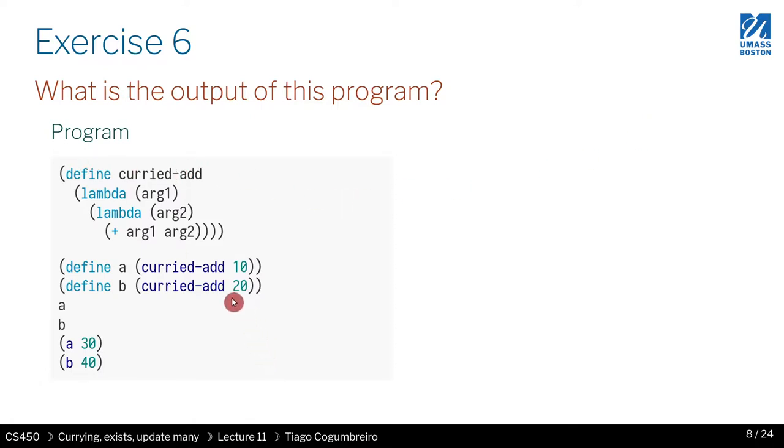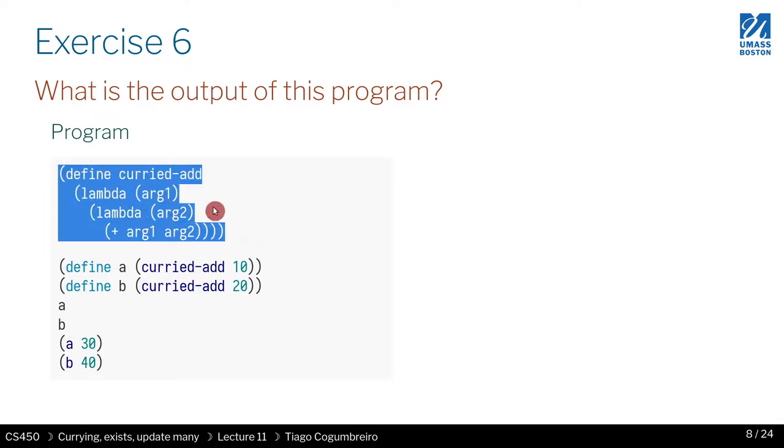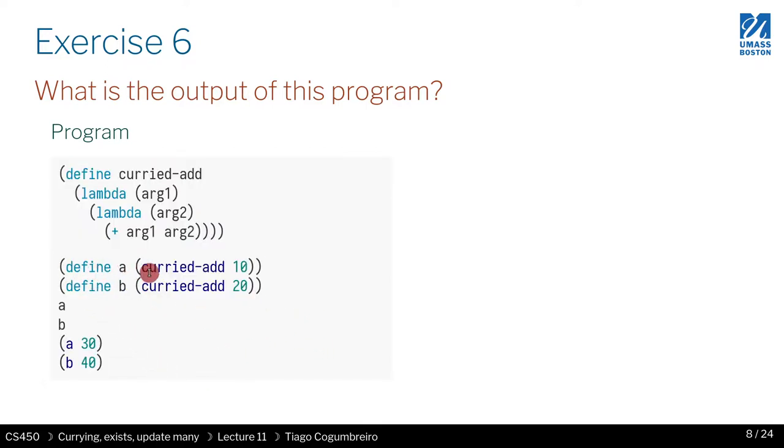Now let's look at this example where we defined another curried add that takes a lambda arg one, a lambda arg two, and then what it does at the end is it adds them together. So this is again a curried binary addition. We have this example where we initialize curried add with 10 assigned to a, and then we initialized b by initializing curried add with 20. And then we print out a, we print out b, and then we call a with 30 and b with 40. So now what I ask you is try to figure out what is the result of each of these four things. Maybe pause the video and try to answer that.